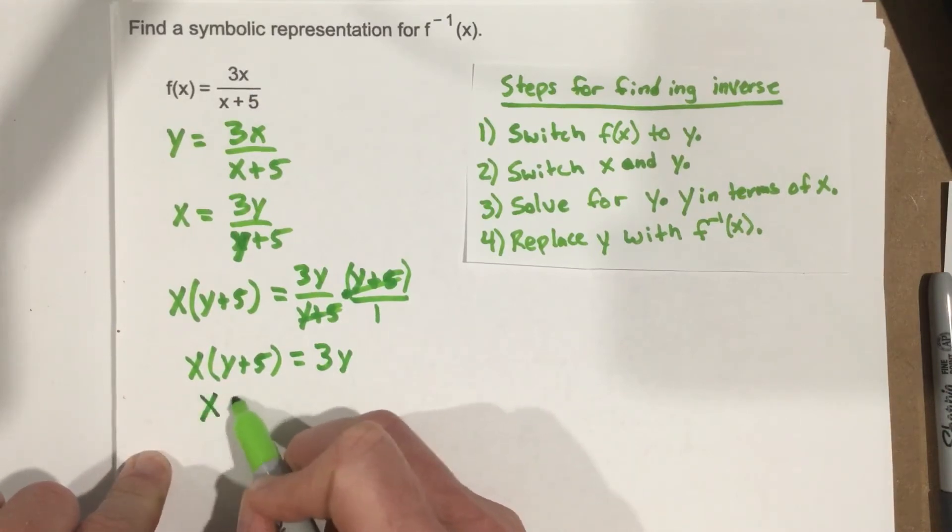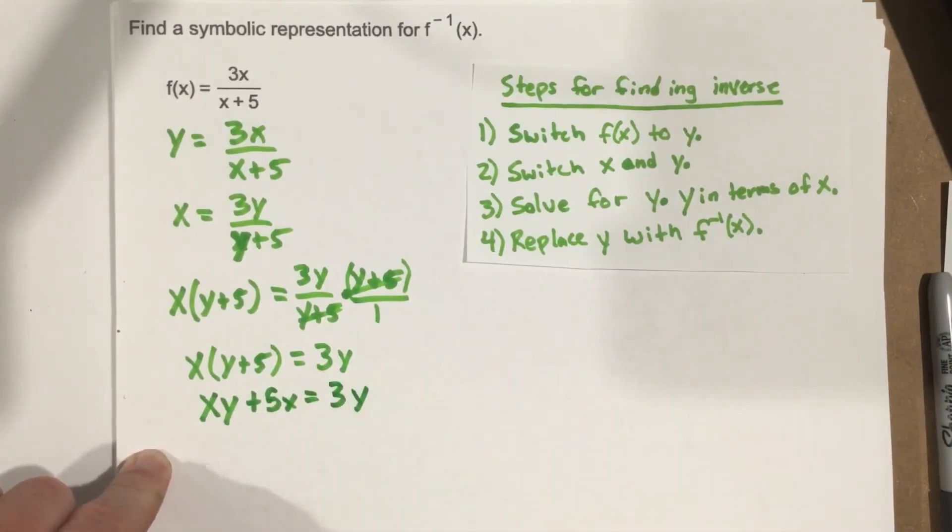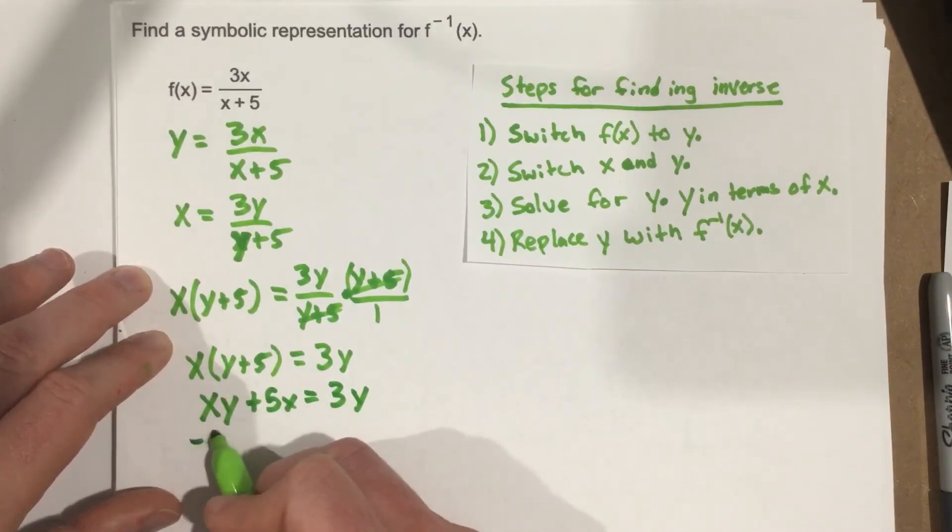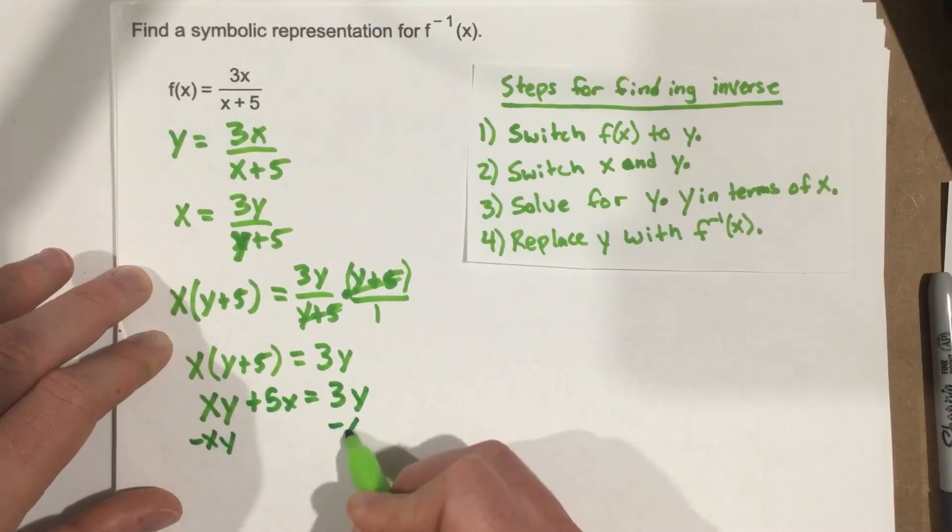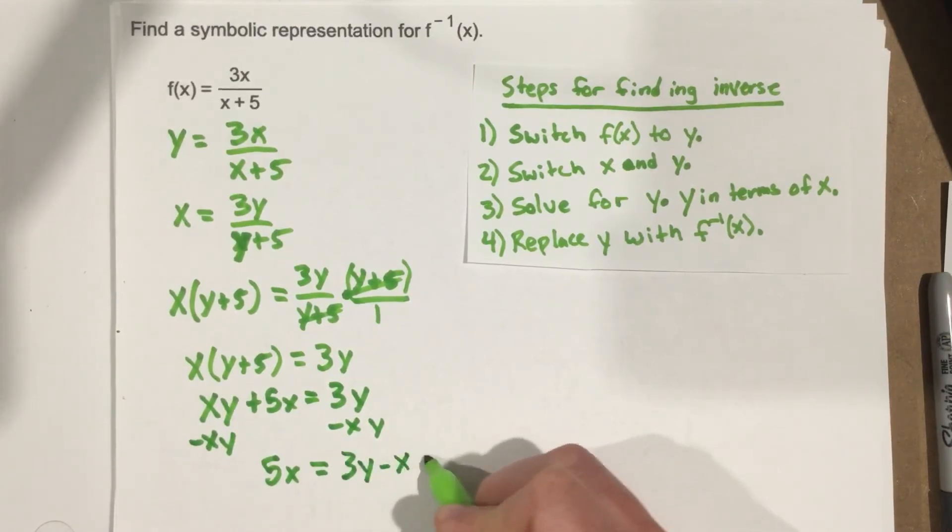So let's say x times y is xy. x times 5 is 5x, equals 3y. I'm going to move this xy over to the right side by subtracting it. And I get 5x equals 3y minus xy.